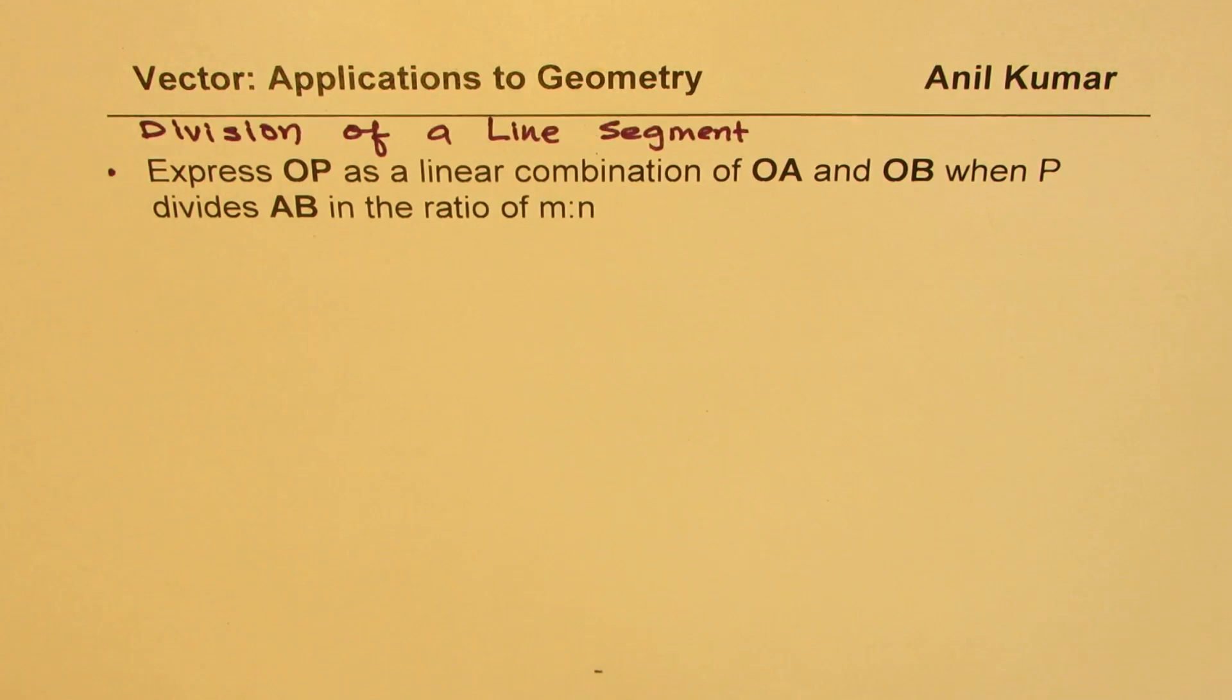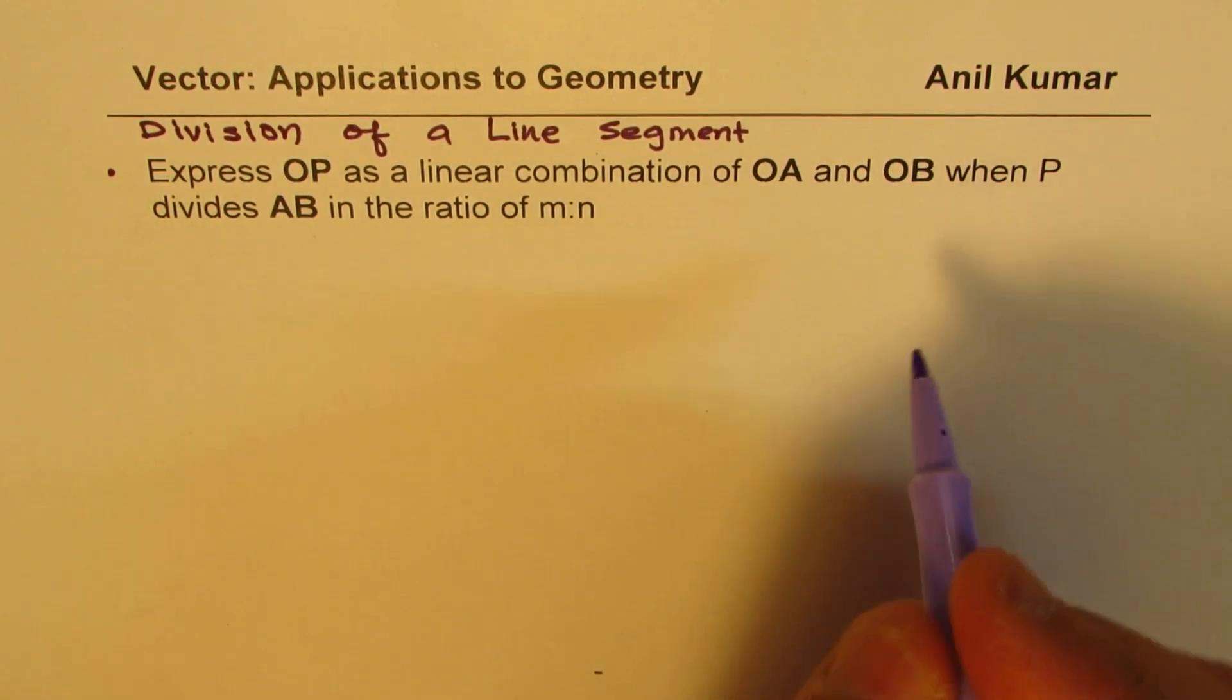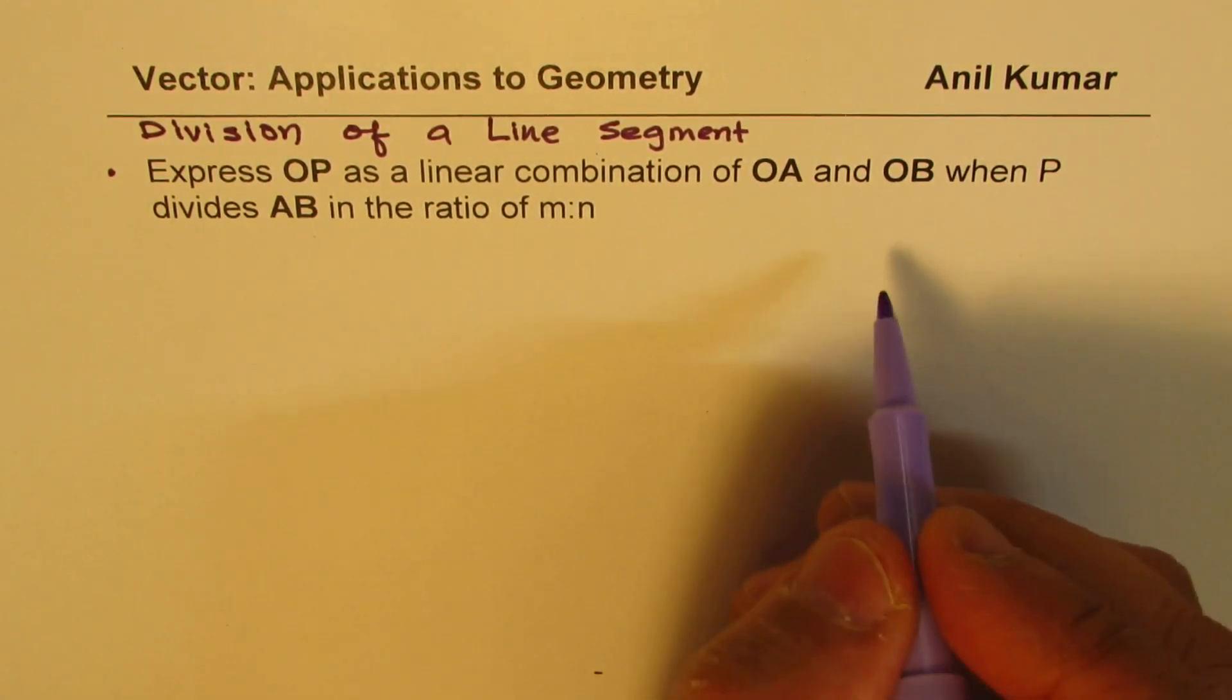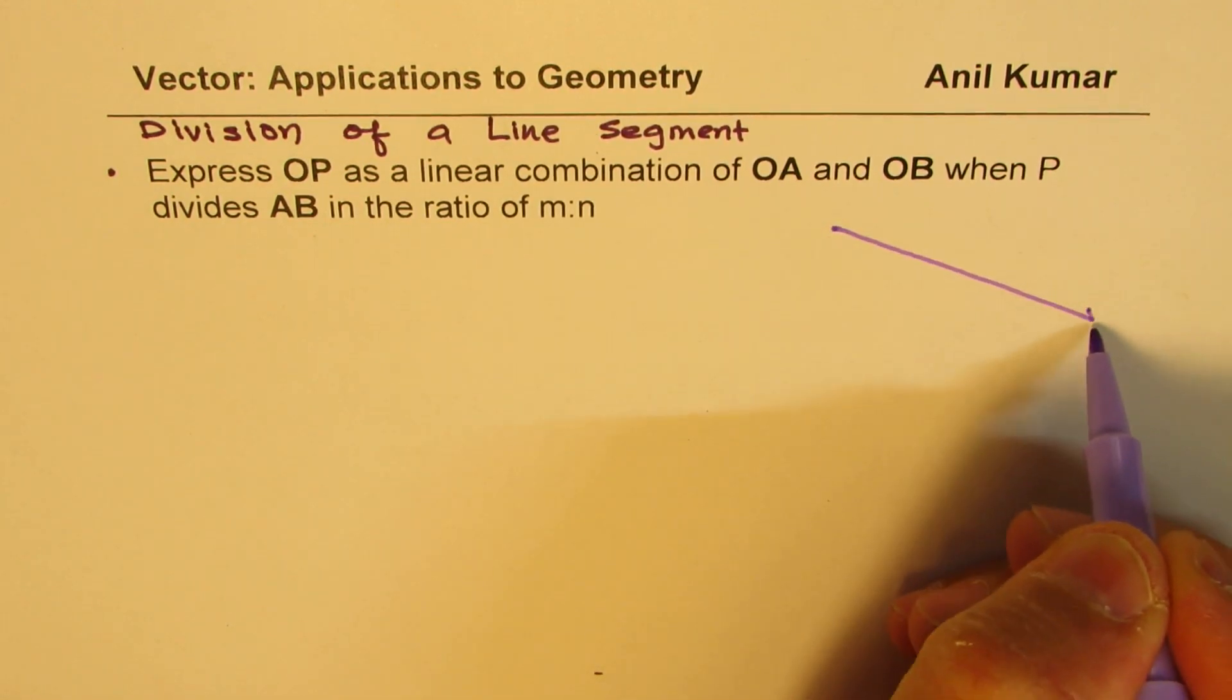The question could be something like this: Express OP as a linear combination of OA and OB when P divides AB in the ratio of M is to N. We'll derive a very standard formula which will be utilized in solving many questions.